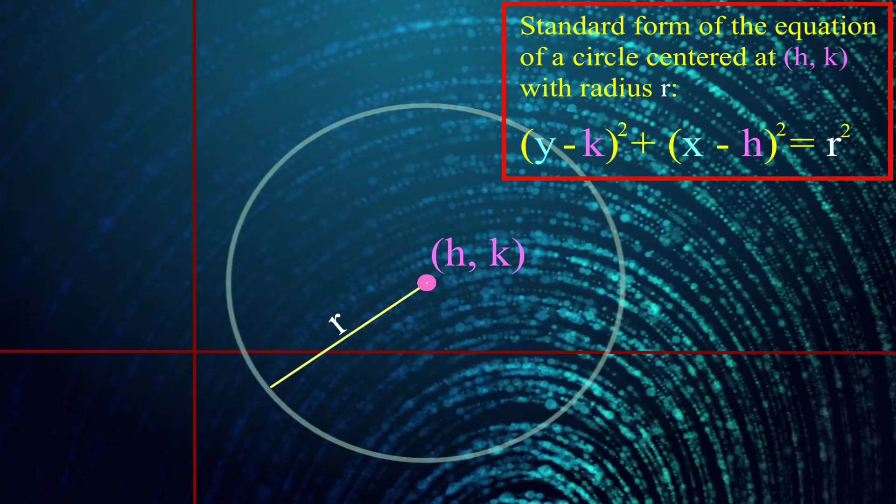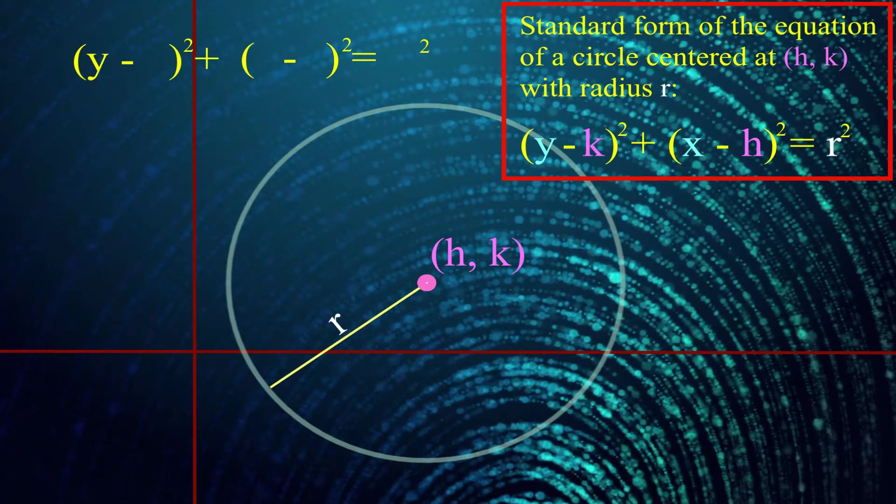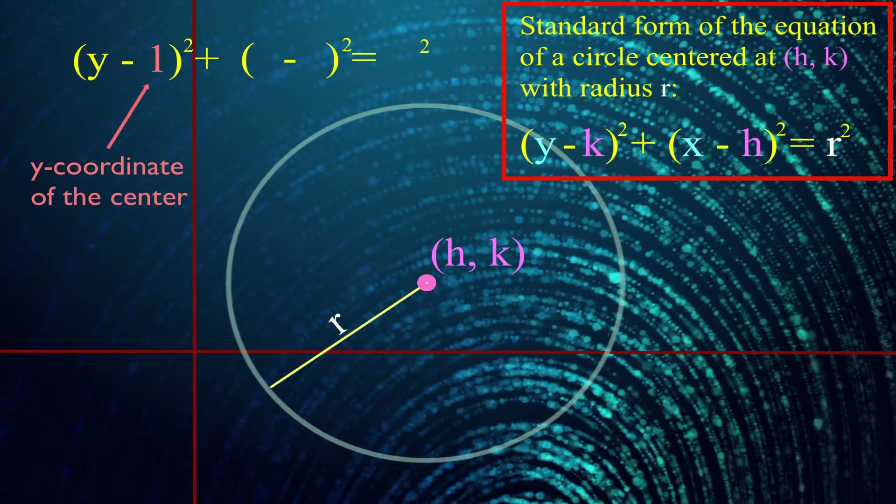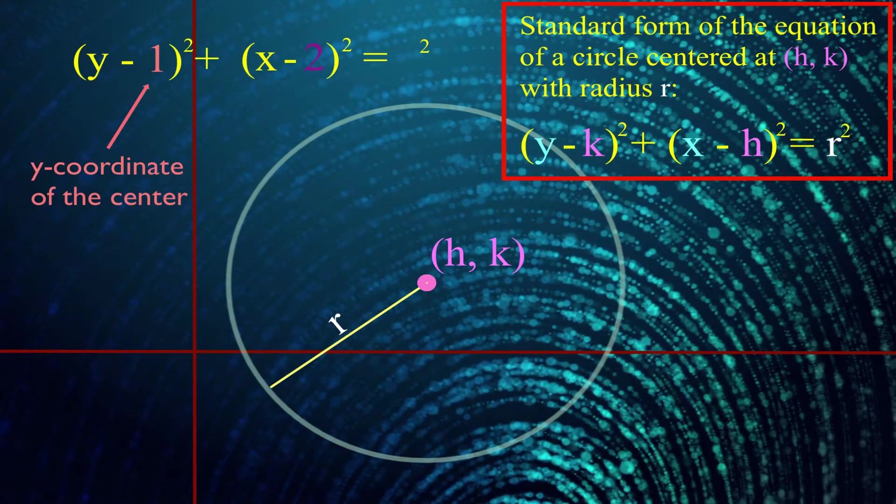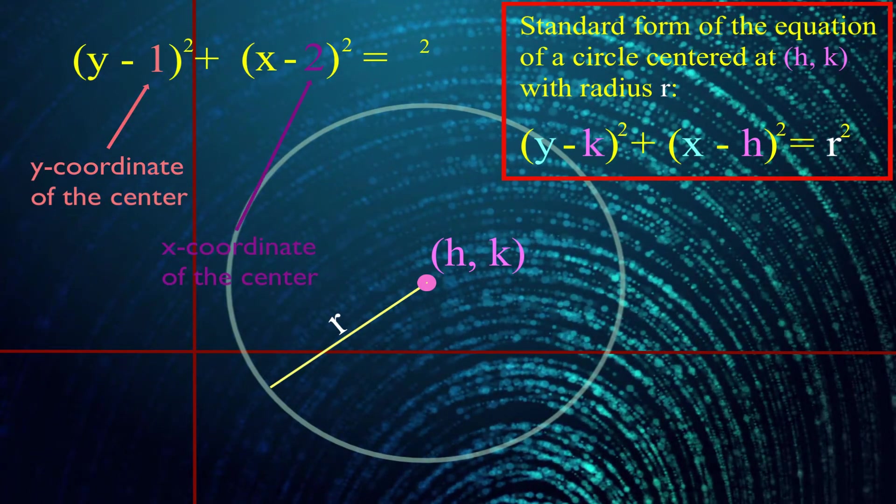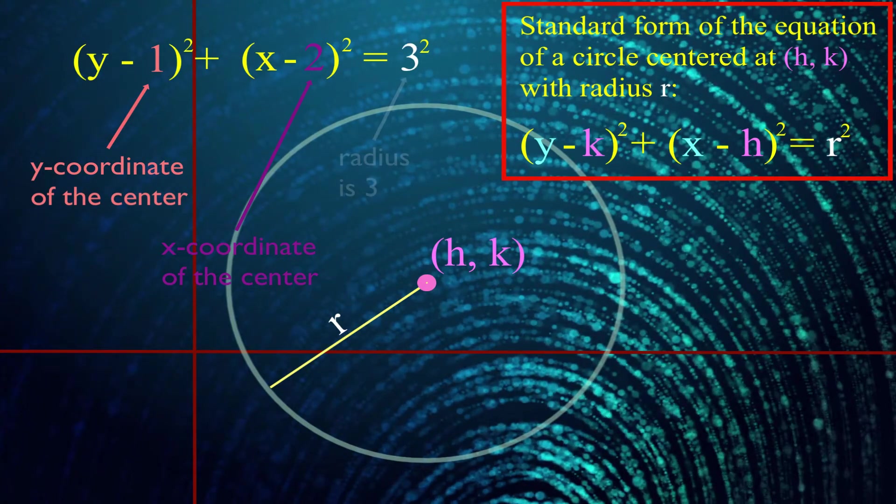You're going to have two sets of parentheses. Inside one of those sets of parentheses will be a y and another number. That other number will be the one relevant to the y coordinate of the center. Inside the other set of parentheses will be an x and some number. And you guessed it, that number right next to the x will be the one that's relevant to the x coordinate of the center. And over on the other side of the equation is where we're going to throw the square of the radius.